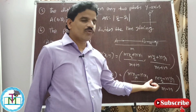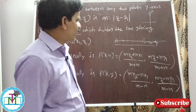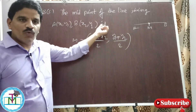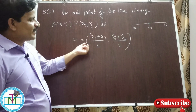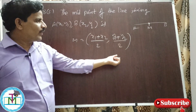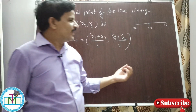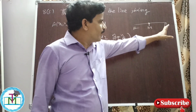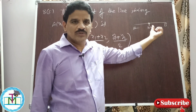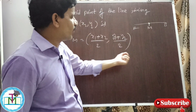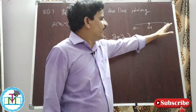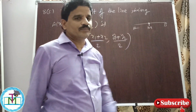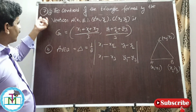The midpoint of the line joining A(x1, y1) and B(x2, y2) is given by M = ((x1 + x2)/2, (y1 + y2)/2). The midpoint M exactly divides AB in the ratio 1:1, 2:2, or any equal ratio. Therefore AM equals BM — the midpoint divides AB into two equal distances.